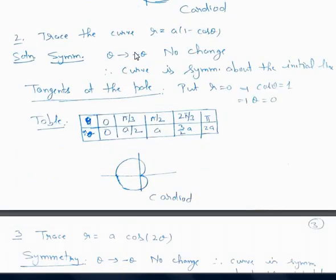Let's take the second example: trace the curve R equals A(1 - cos theta). This curve is also symmetrical about the initial line, because replacing theta by minus theta gives no change in the equation. To find tangents at the pole, we put R equal to 0, which gives cos theta equals 1, so theta equals 0. Lastly, we form the table, taking values of theta from 0 to pi, since the curve is symmetrical about the initial line.